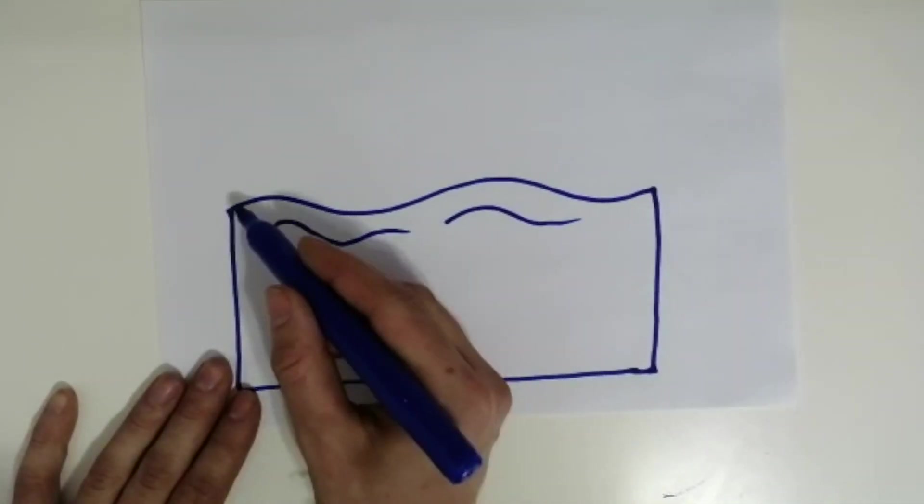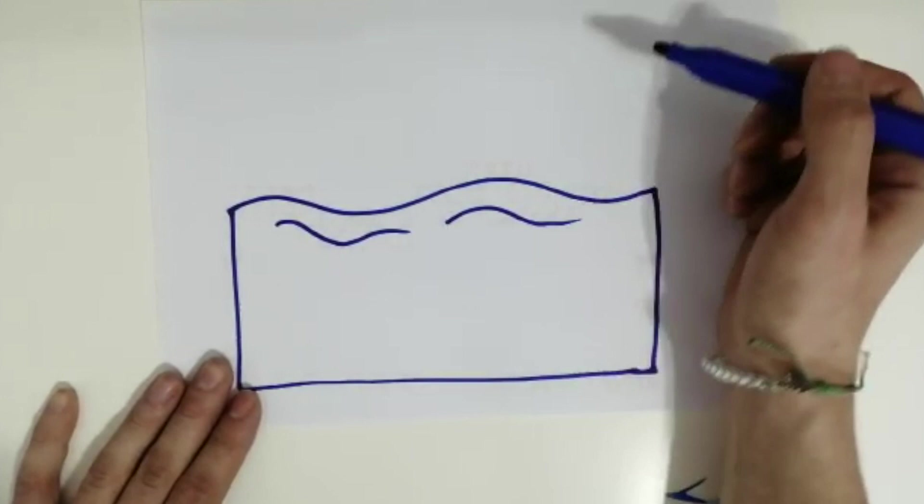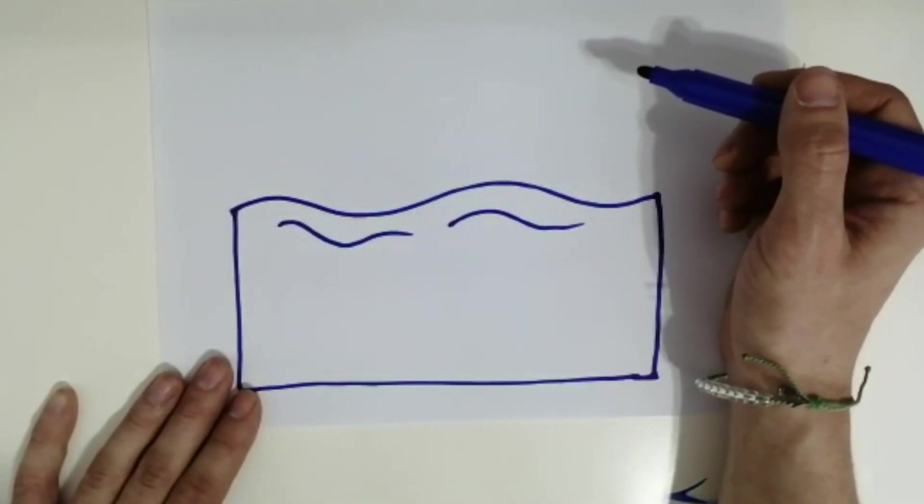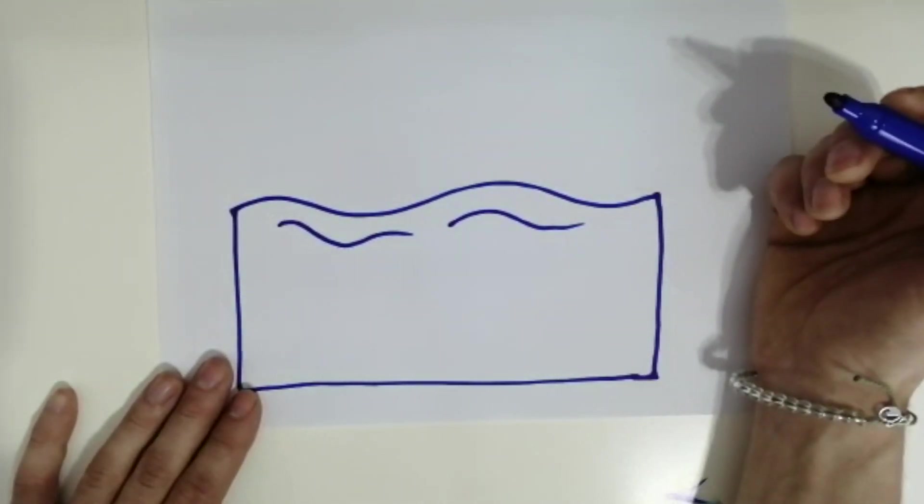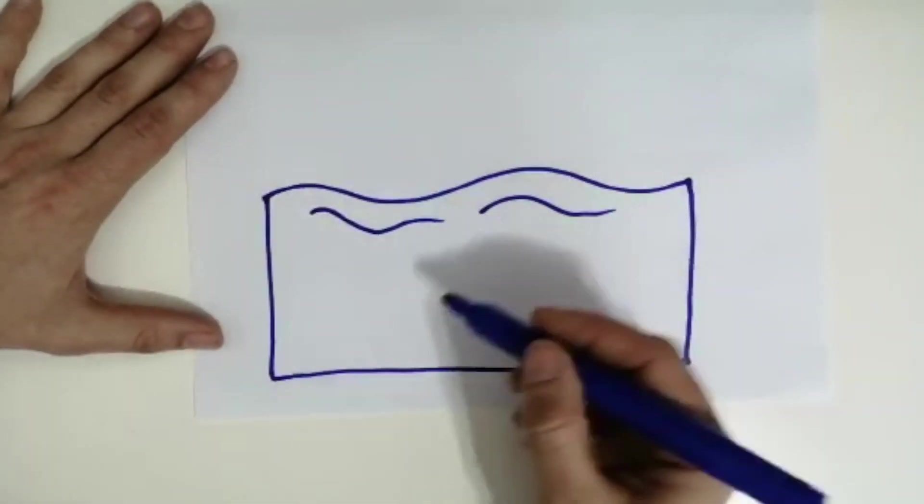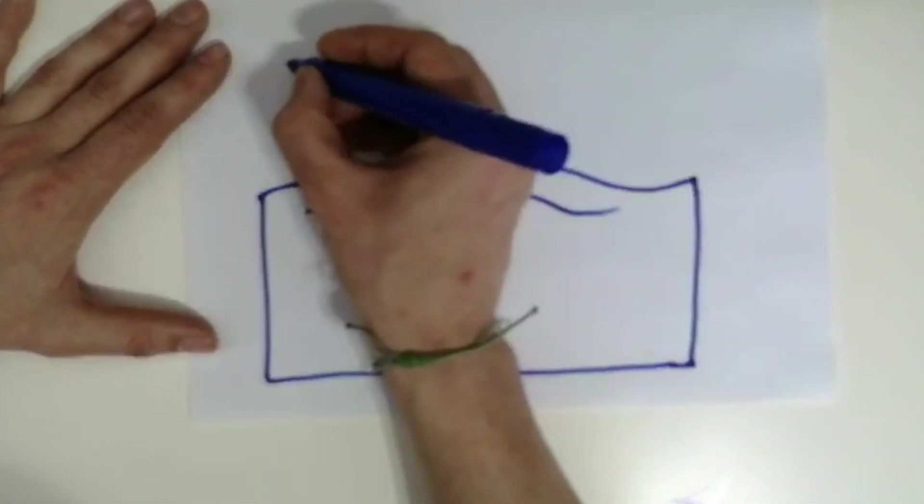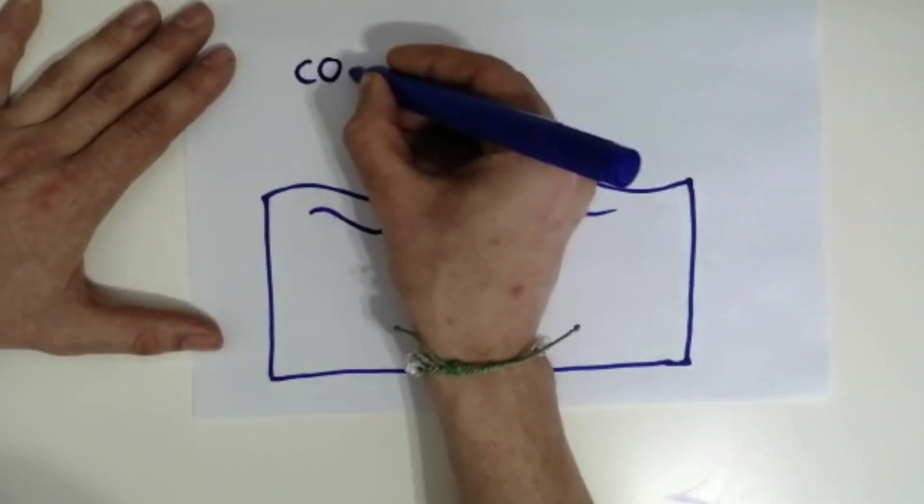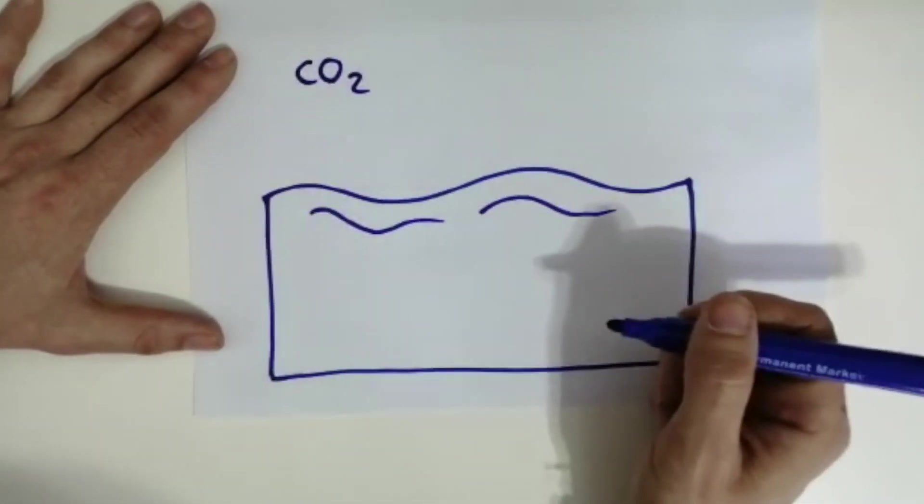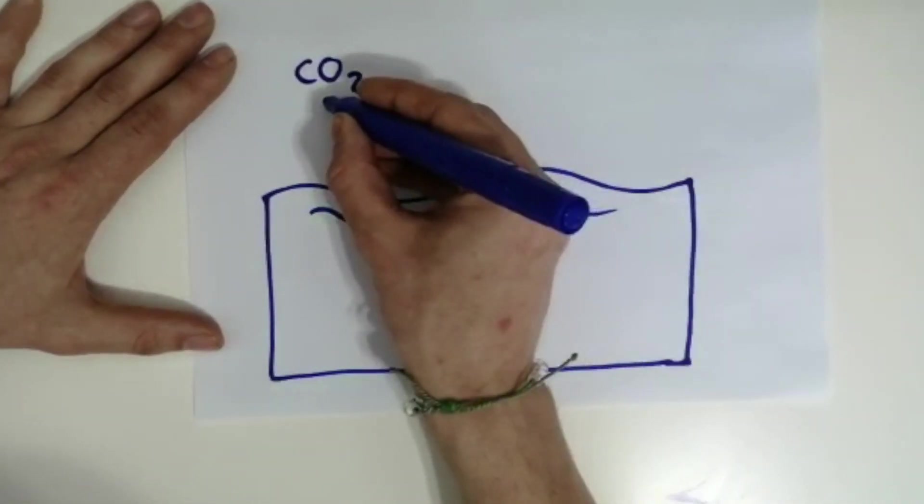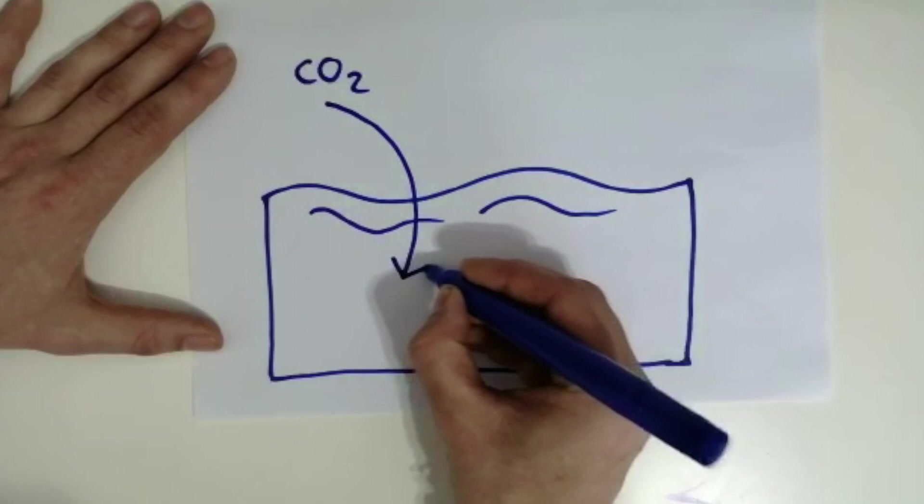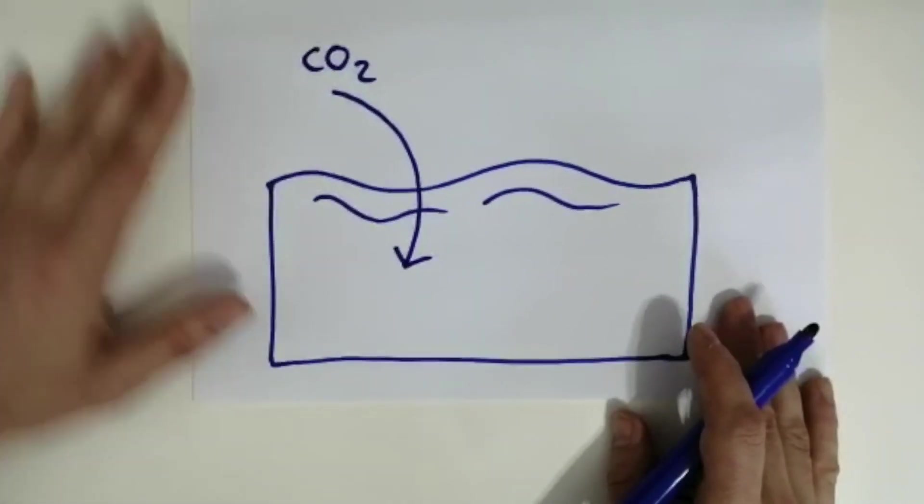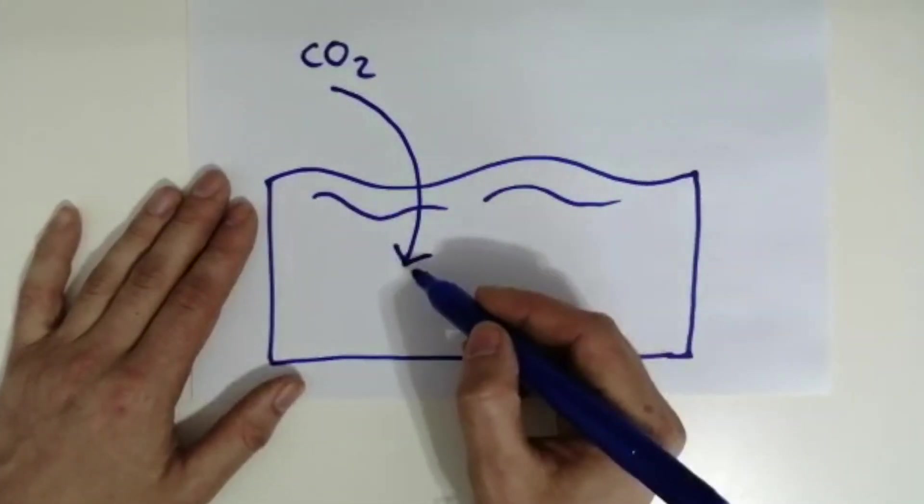Here is an ocean I prepared earlier. Once we had our liquid water, huge amounts forming vast oceans across the planet, this allowed some of the carbon dioxide from the atmosphere. Remember we had loads, like 95 percent carbon dioxide. Some of that carbon dioxide would dissolve in the oceans.